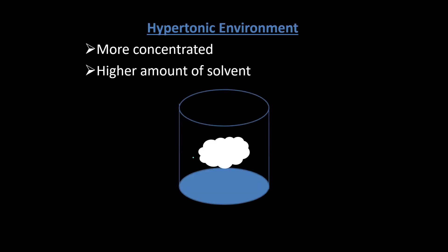In a hypotonic environment, there is an excessive amount of solvent. In a hypertonic environment, the external environment has more concentrated solute concentration. This is a hypertonic environment — how does it affect the cell?